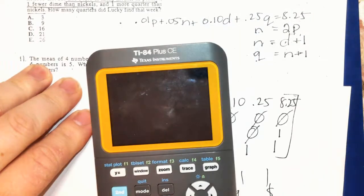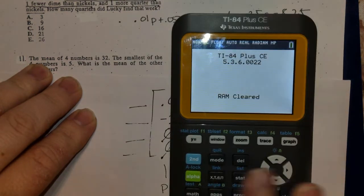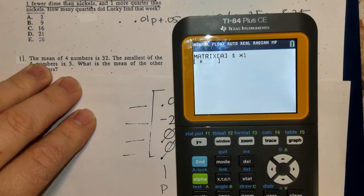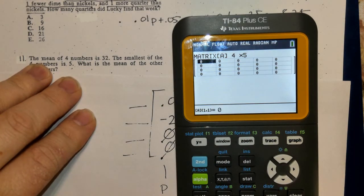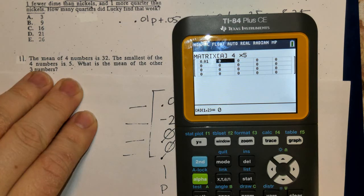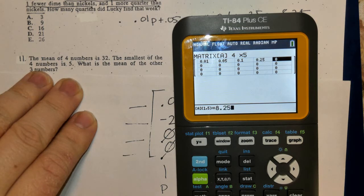Go into your calculator. 2nd matrix, we're going to edit it. This is a 4 by 5: 4 rows, 5 columns. We're going to start with 0.01, 0.05, 0.10, 0.25, and 8.25.